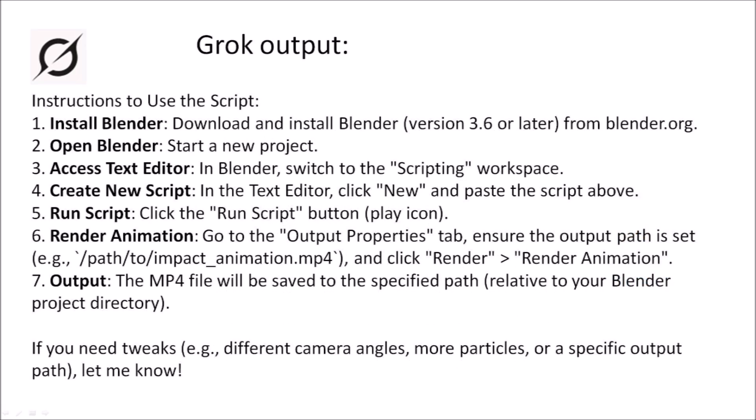I asked Grok to produce a script to use with Blender, and Grok generated a Python code program with these instructions: install Blender version 3.6 or later from Blender.org; open Blender and start a new project; access the Text Editor by switching to the scripting workspace; create a new script, click New and paste the script; run the script by clicking the Run Script button; go to the Output Properties tab, ensure the output path is set, and click Render Animation. The mp4 file will be saved to the specified path.